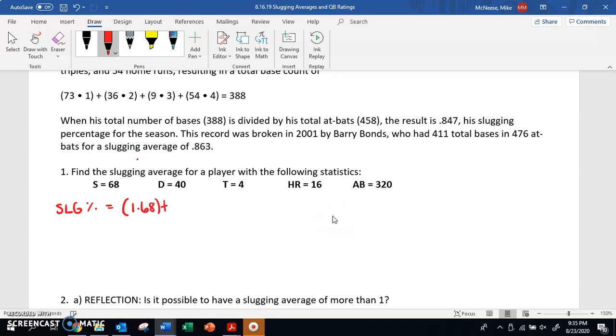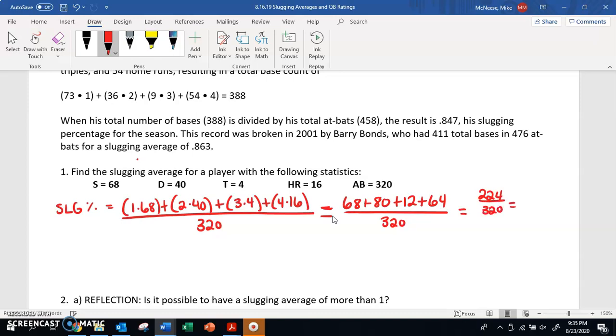So I'm going to have 1×68 + 2×40 + 3×4 + 4×16 all divided by 320. If you multiply this out, 1×68 is 68, 2×40 is 80, 3×4 is 12, 4×16 is 64, all still divided by 320, which simplifies to 224/320, or 0.700. So this person was batting a slugging percentage of 0.700.